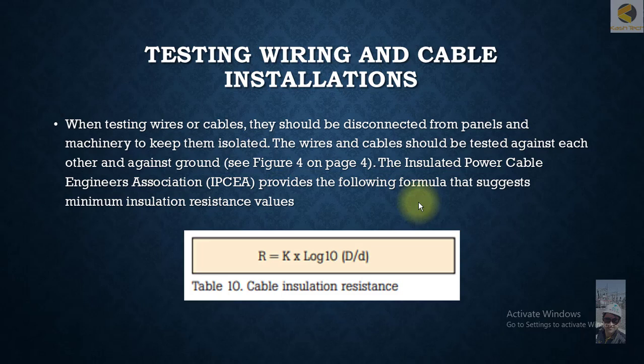The wires and cables should be tested against each other and against ground. The Insulated Power Cable Engineers Association provides the following formula that suggests the minimum insulation resistance required: R equals K times log of 10 divided by D, where K is a correction factor.